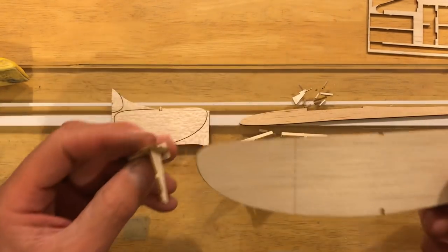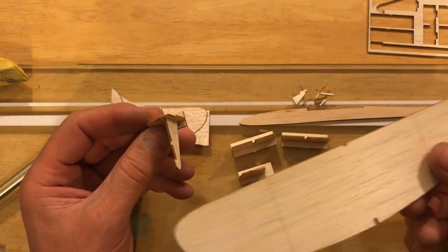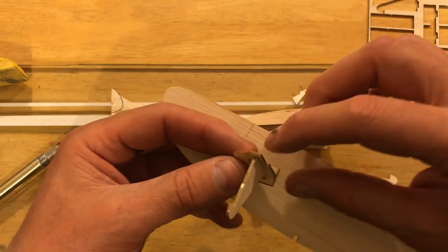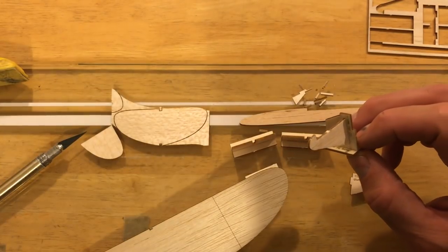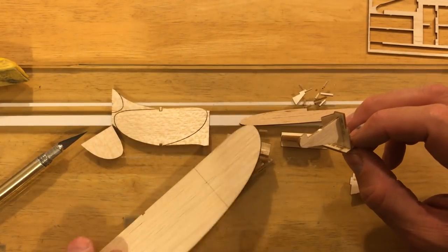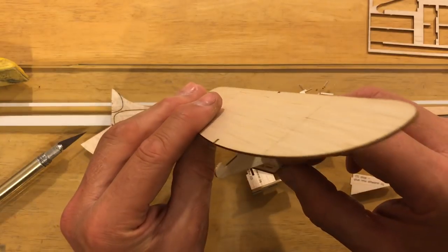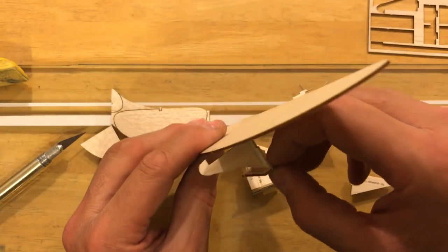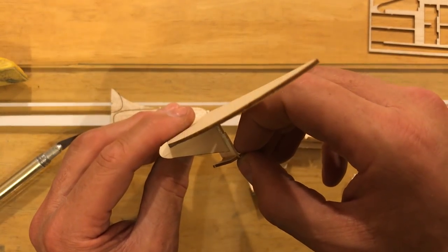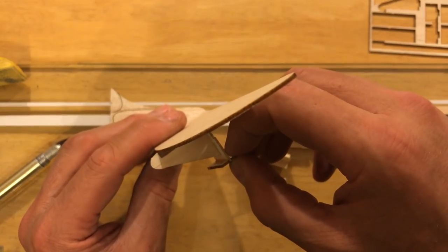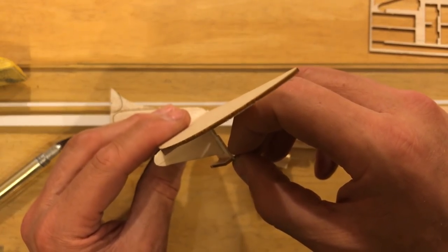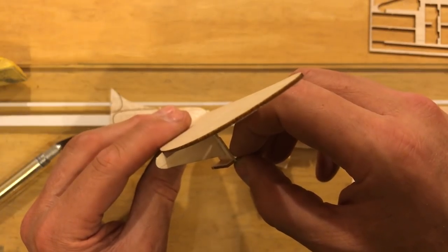I was interrupted in the last video by my phone telling me my storage is full. I was about to show you that the CG tester will work something like this. The stop sets against the front leading edge of the wing, and that tells you where the airplane should be positioned on the CG for optimal balance.